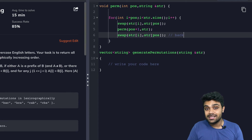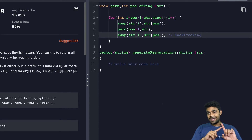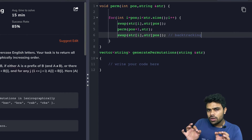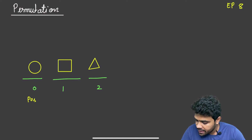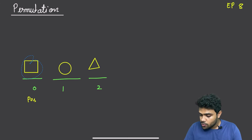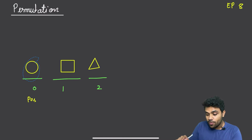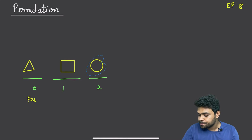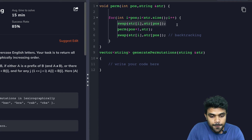Whatever dust you are creating, you have to clean that dust before going to the next iteration. So the backtracking step is: swap str[i] with str[position] again to undo. Let's see the significance on the board: if I bring the square to position zero by swapping with circle, then after recursion I must undo — bring circle back to position zero — so that when I want to bring triangle next, I can swap circle with triangle correctly. That is why we need this undo step.